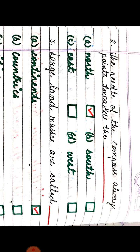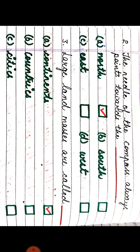The next one: large land masses are called ___. The options are: Option A, continents; Option B, countries; Option C, cities; Option D, oceans. The correct answer is continents.